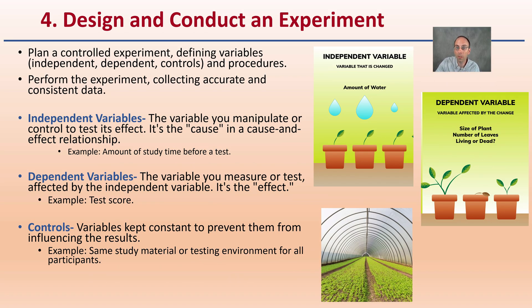And then design and conduct an experiment. So this could be a little more complicated. This is where most people think science only exists, in the experimentation phase. But as you can see, there's those three key steps leading up to that. Plan a controlled experiment, defining the variables, the independent, dependent controls and procedures you're going to utilize. Then perform the experiment, collect accurate data.